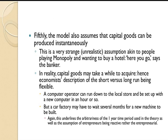Fifthly, the model also assumes that capital goods can be produced instantaneously — a very strange, unrealistic assumption, akin to playing Monopoly and wanting to buy a hotel: here you go, says the banker, here's your hotel. In reality, capital goods may take a while to acquire. Economists' description of the short versus long run is flexible — a web design company can run down to a local computer store and set up with a new computer within an hour or so; that's their long run. But a car factory may have to wait several months for a new machine to be built. This underlines the arbitrariness of using a one-year time period, as well as the assumption of entrepreneurs being reactive rather than entrepreneurial — very mechanistic and quite unrealistic.